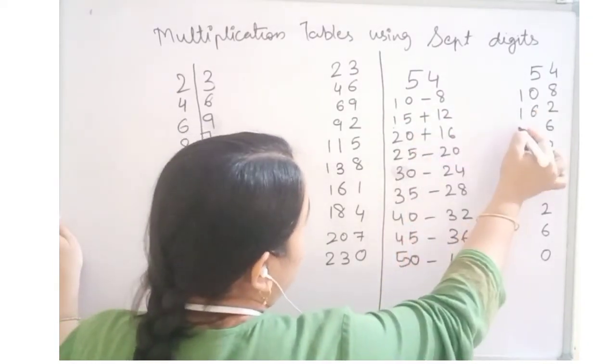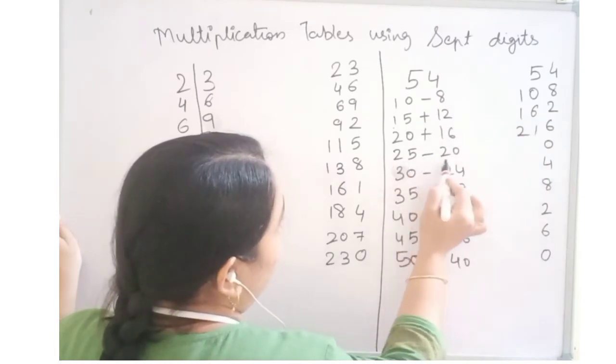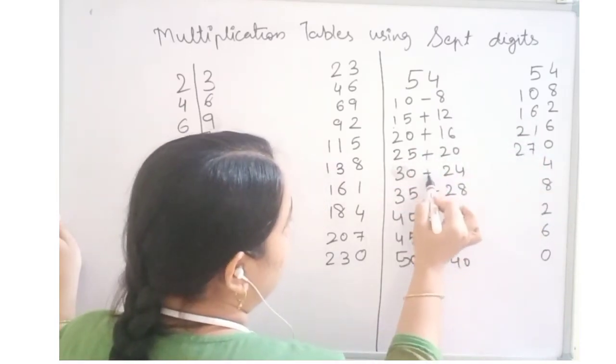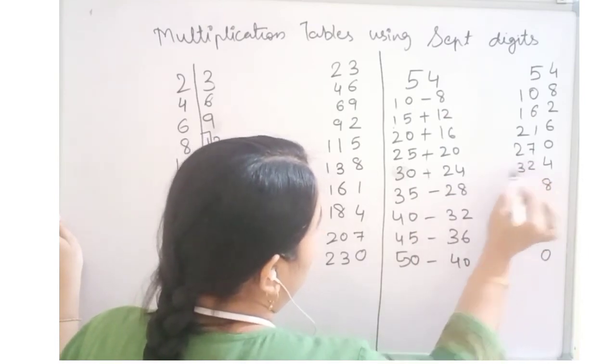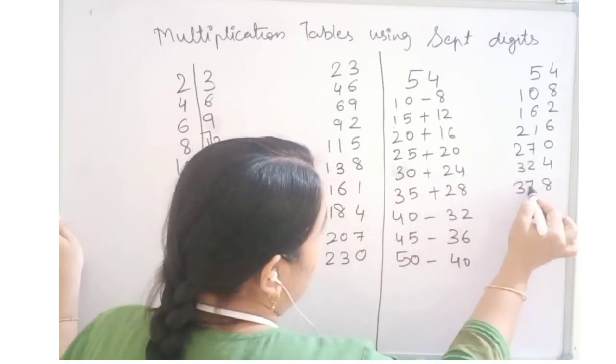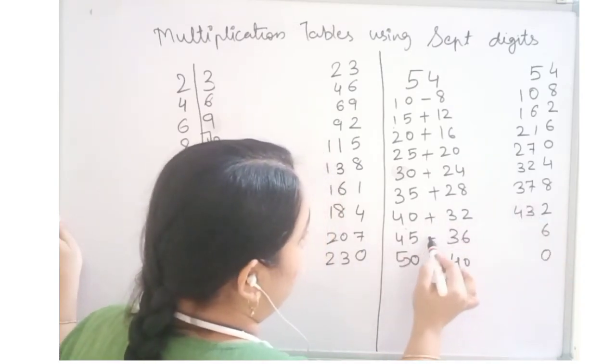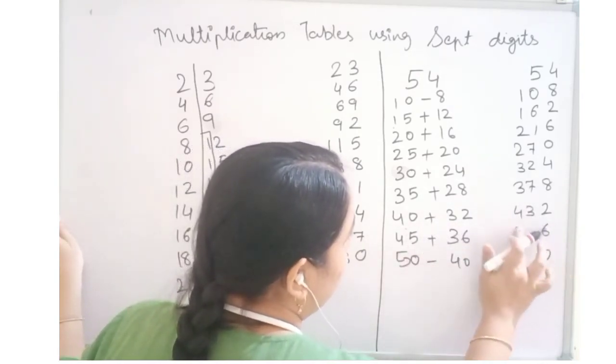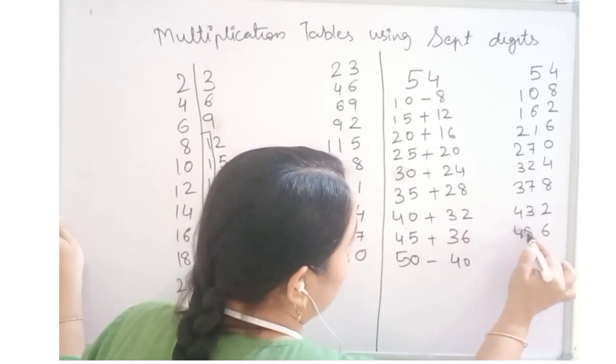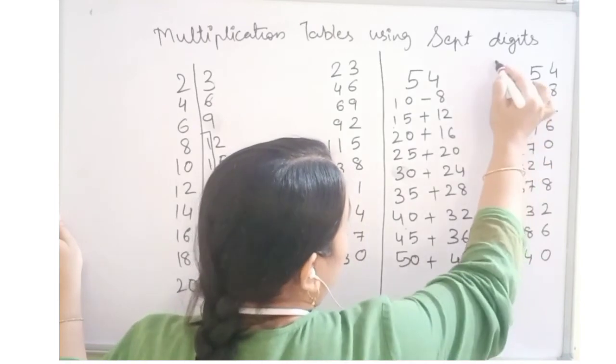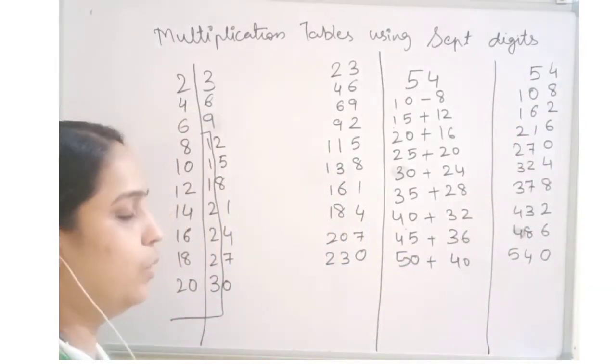20 plus 1 is 21, 25 plus 2 is 27, 30 plus 2 is 32, 35 plus 2 is 37, 40 plus 3 is 43, 45 plus 3 is 48, 50 plus 4 is 54. Now this is the multiplication table for 54.